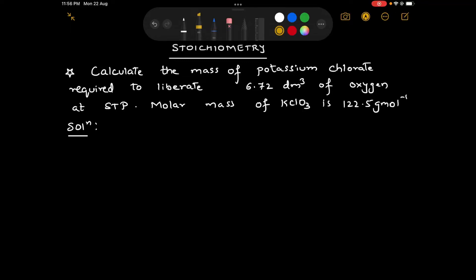Today we are going to solve a numerical on stoichiometry. Calculate the mass of potassium chlorate required to liberate 6.72 decimeter cube of oxygen gas at STP.